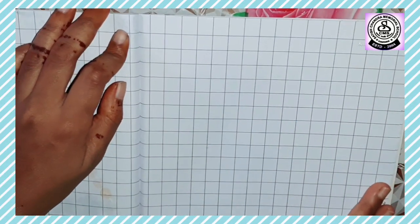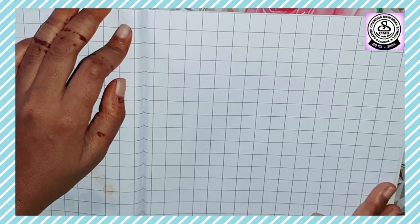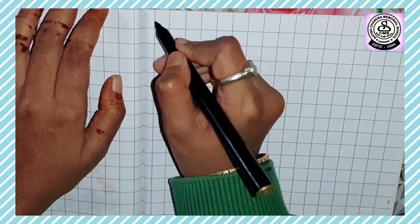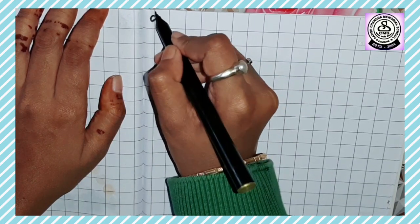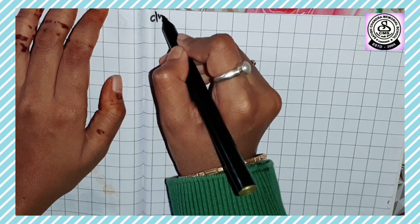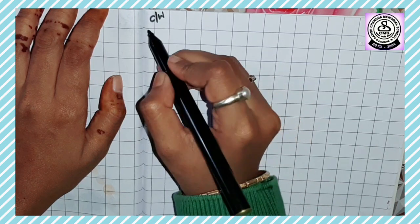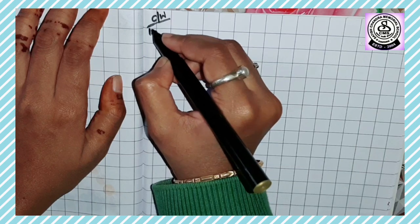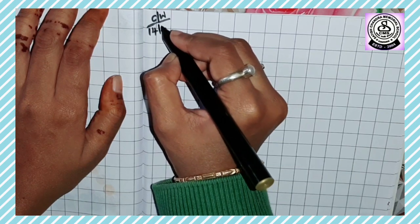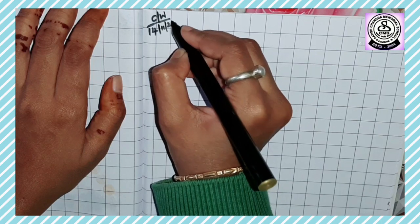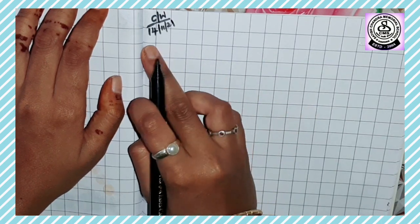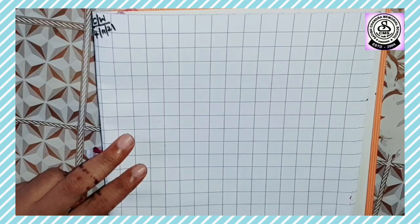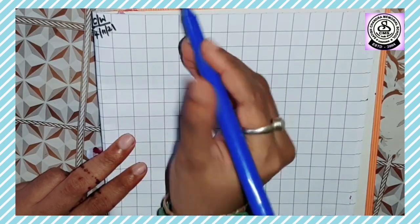So kids, first take out your copy and take out the next page. First we'll write here CW, it is classwork, and today's date. Okay, today's date is 14 November 2021.